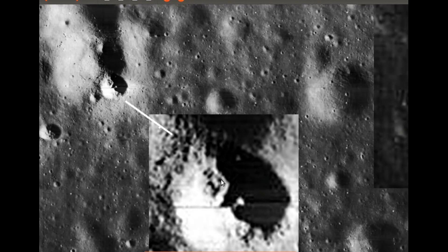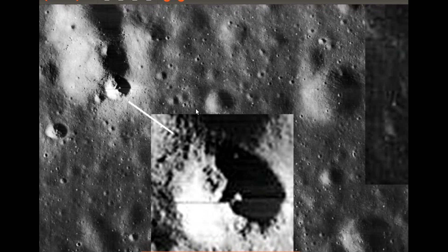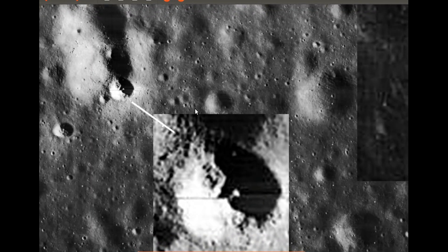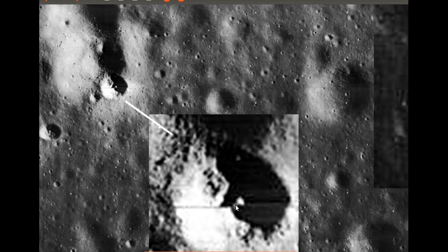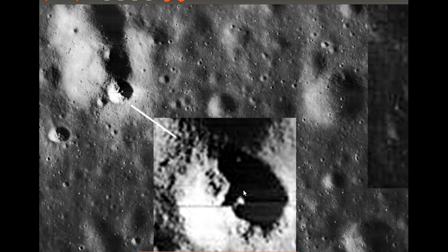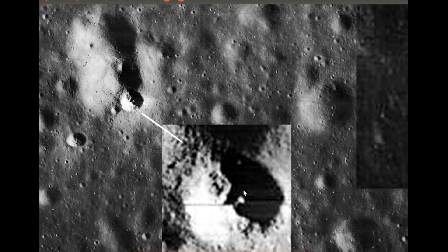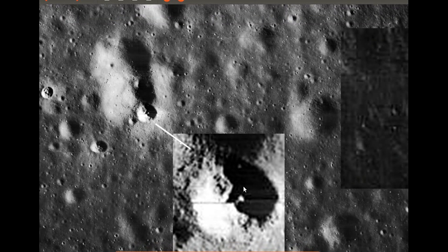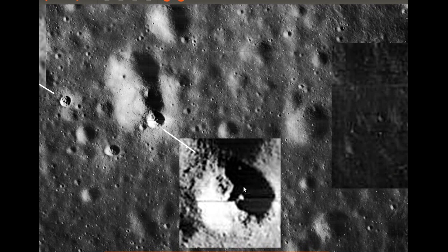Here we have a similar sort of structure to the first one, and the thing you'll notice is it's on the same alignment — the structure runs that way. And what is this thing that's poking up? It looks for all the world like some sort of dish antenna. It could just be a funny shaped rock.